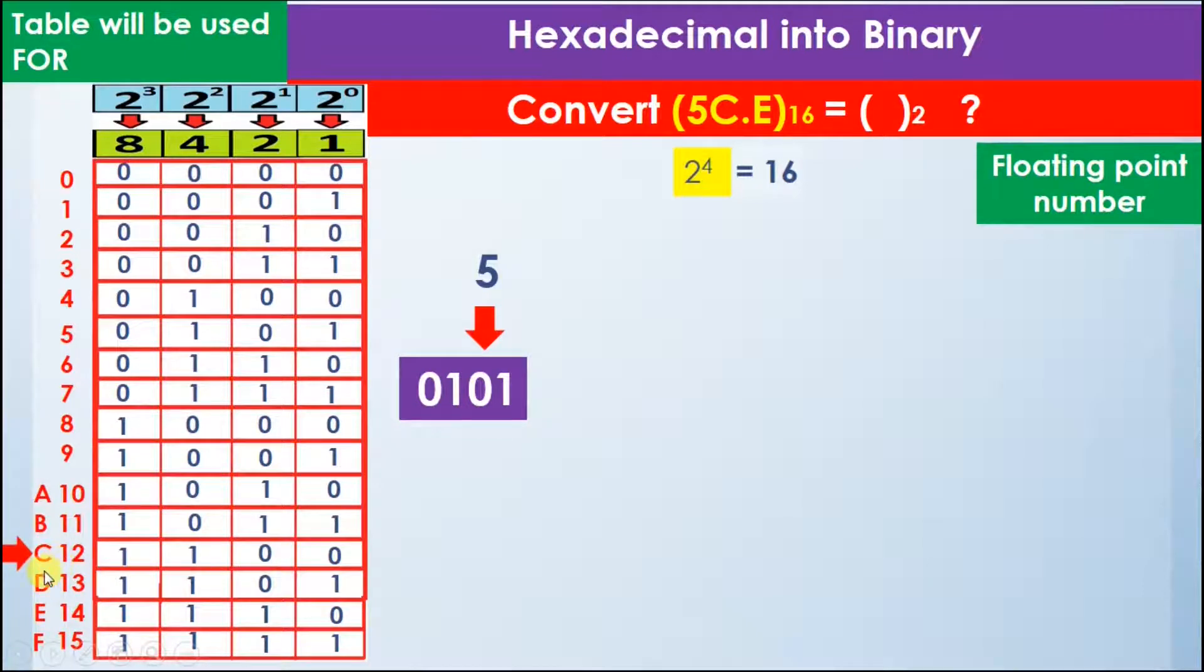The binary value of C in the table is 1100, that is actually 12, so we will write C as 1100. Next comes the decimal point. The decimal point will maintain its position, so it comes here.